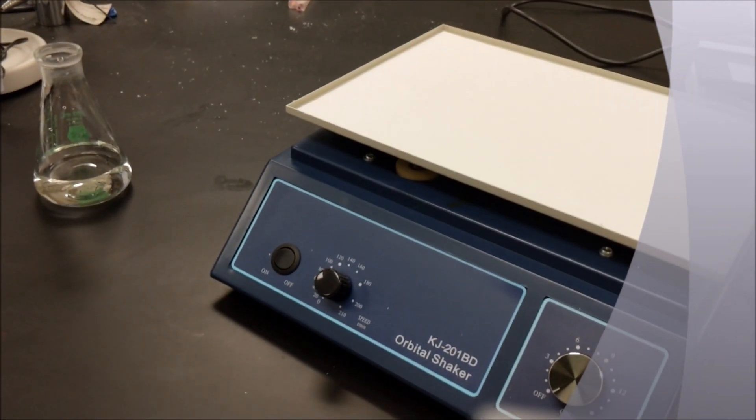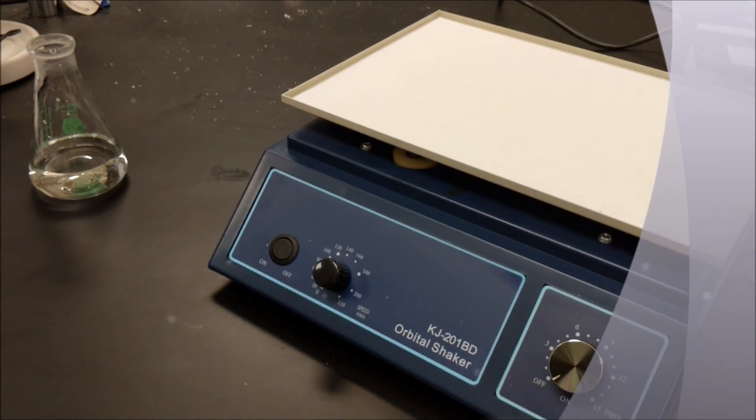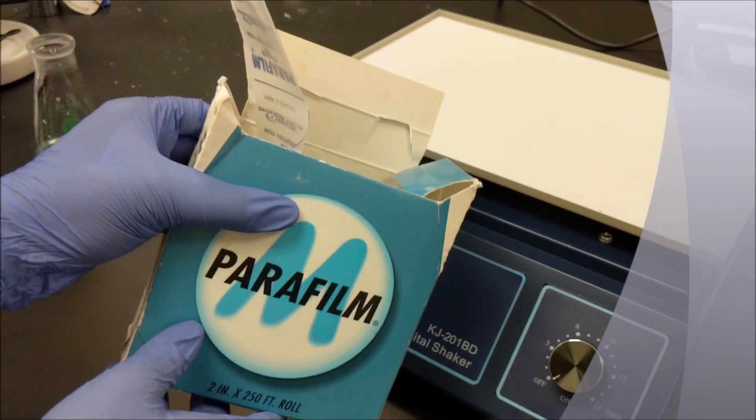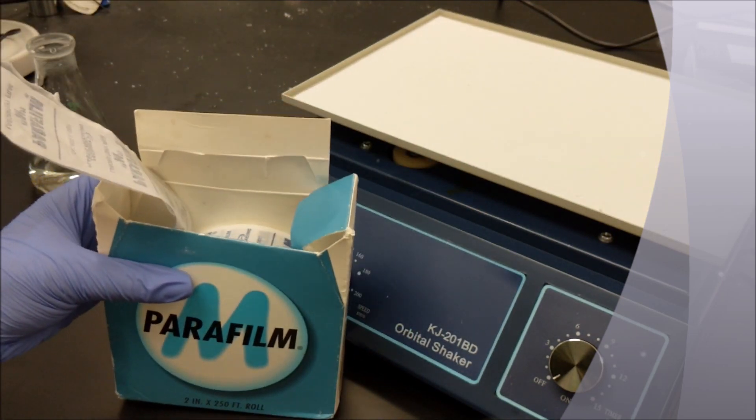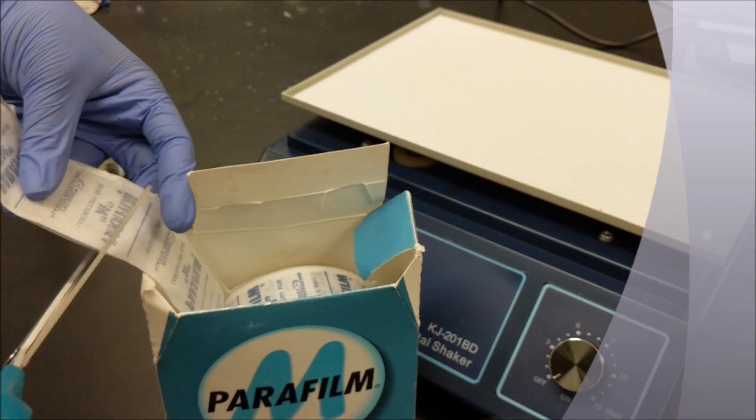Before you add any solution to the shaking platform, you must properly prepare the flasks. To do this, begin by grabbing a parafilm strip from the lab and cutting about two square lengths from the parafilm.